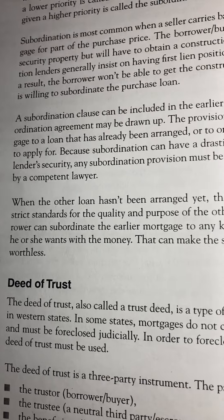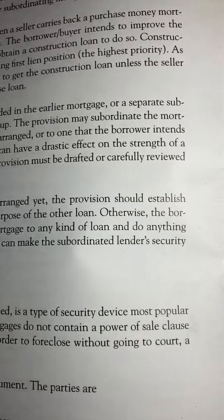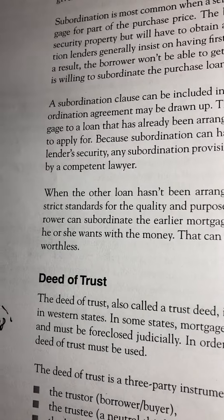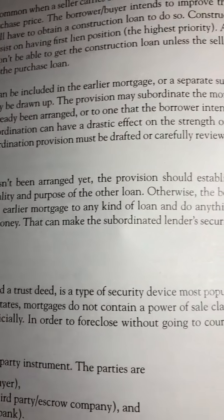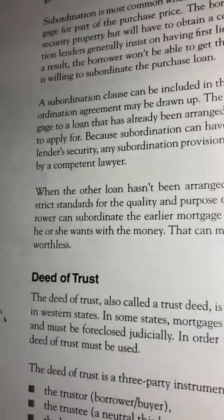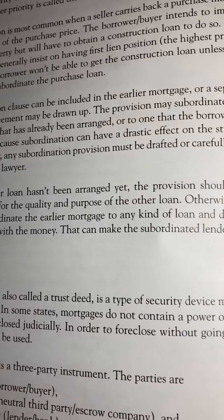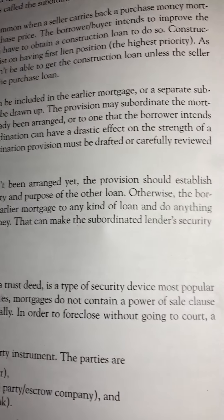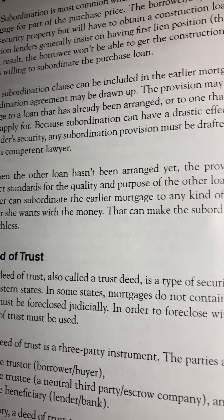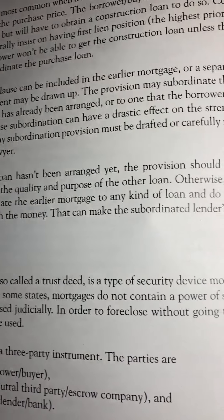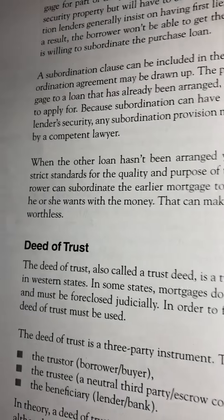When the other loan hasn't been arranged yet, the provision should establish strict standards for the quality and purpose of the other loan. Otherwise, the borrower can subordinate the earlier mortgage to any kind of loan and do anything he or she wants with the money. That can make the subordinated lender's security worthless.